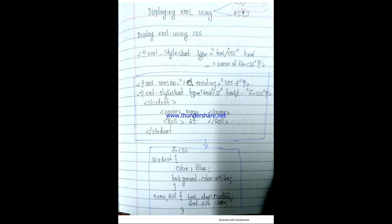What is a CSS display? In the CSS file, you can type the styling rules. You can use this XML display with CSS. For the student element, you can set a background color. You can also set the background color for text elements.